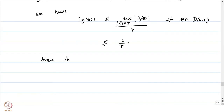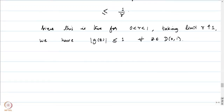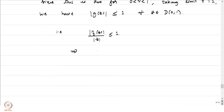This inequality holds for all r < 1. Taking the limit as r goes to 1 from below, we conclude that |g(z)| ≤ 1 for all z in D(0,1). The meaning of |g(z)| ≤ 1 is precisely that |f(z)/z| ≤ 1, which translates to |f(z)| ≤ |z| for all z in D(0,1).